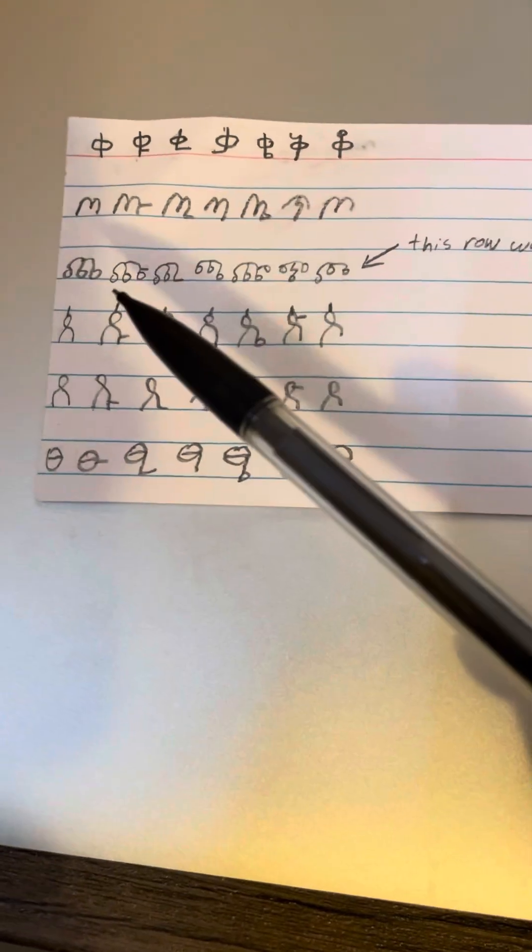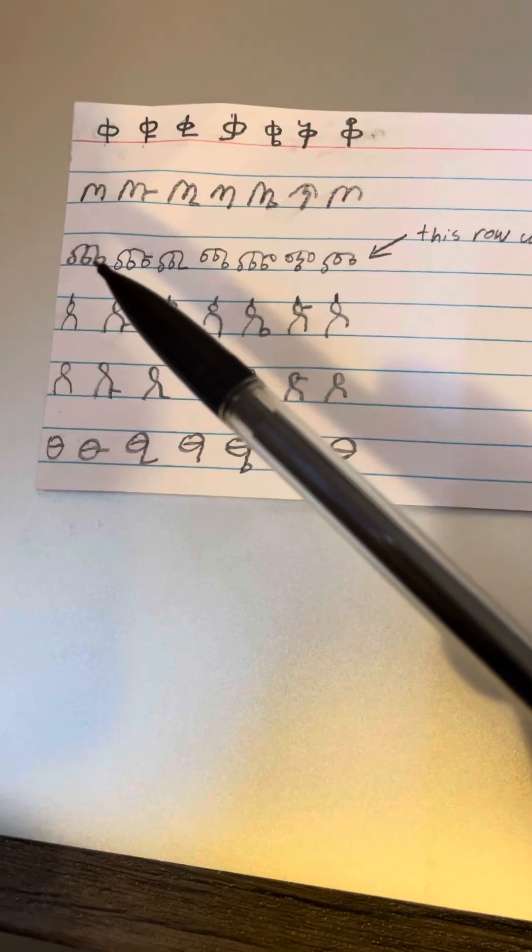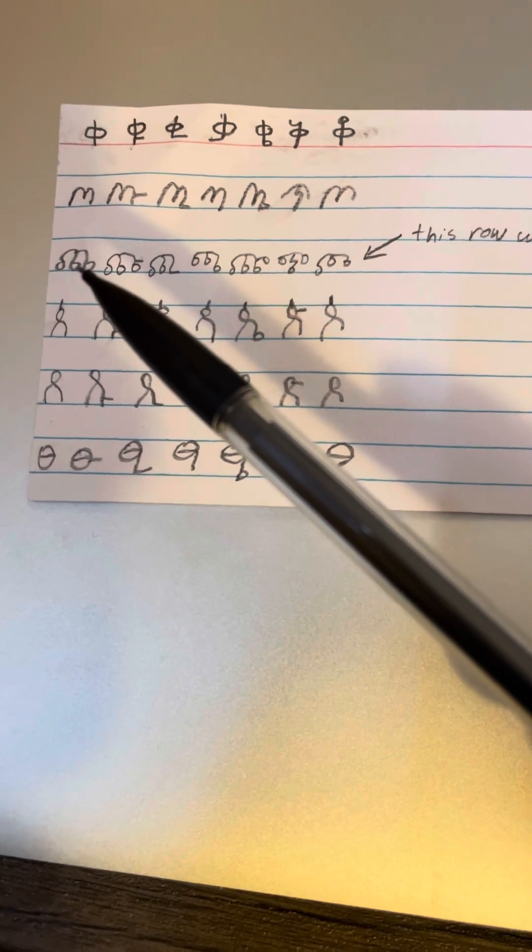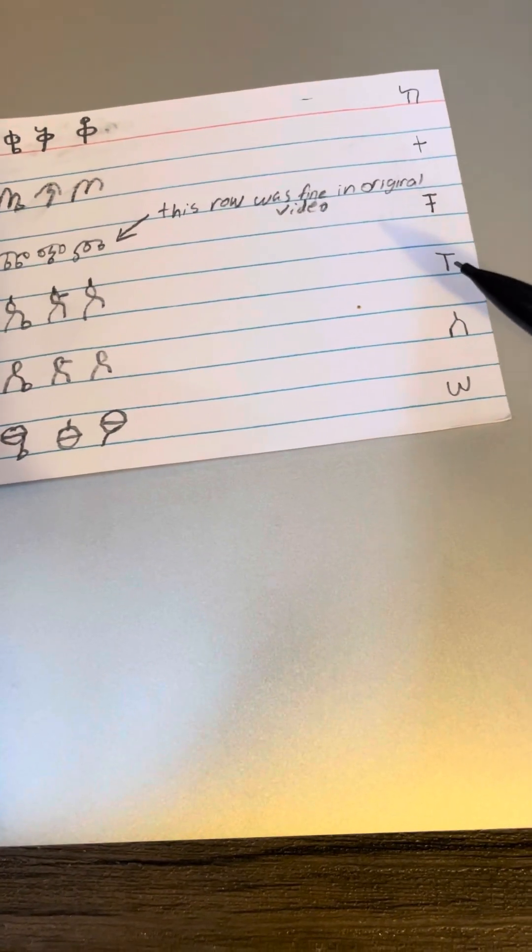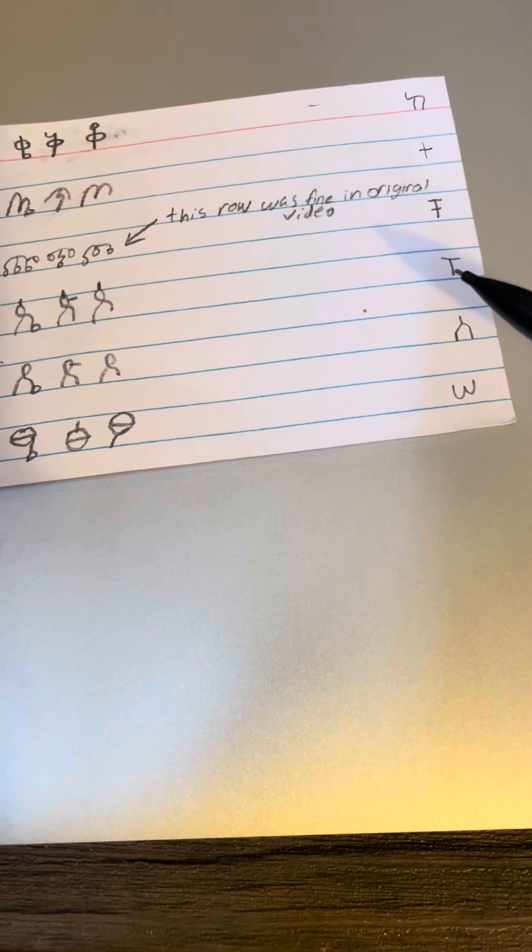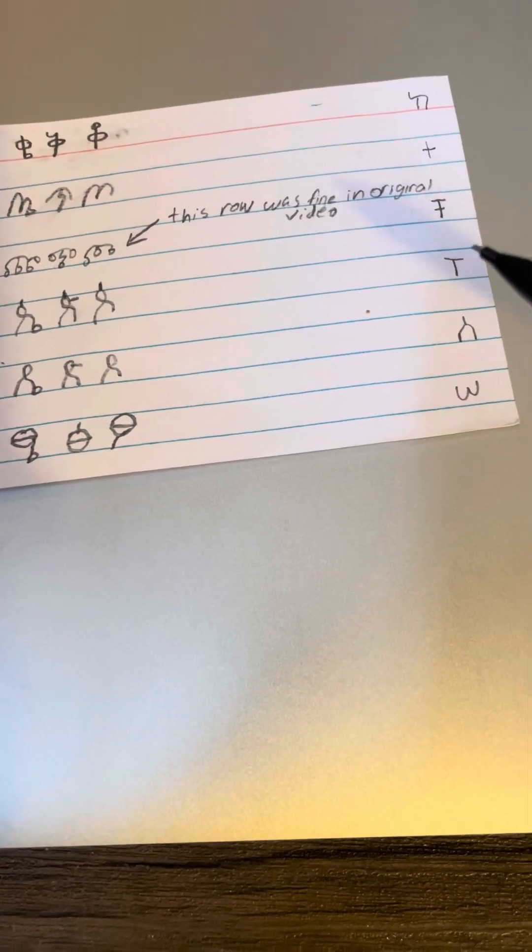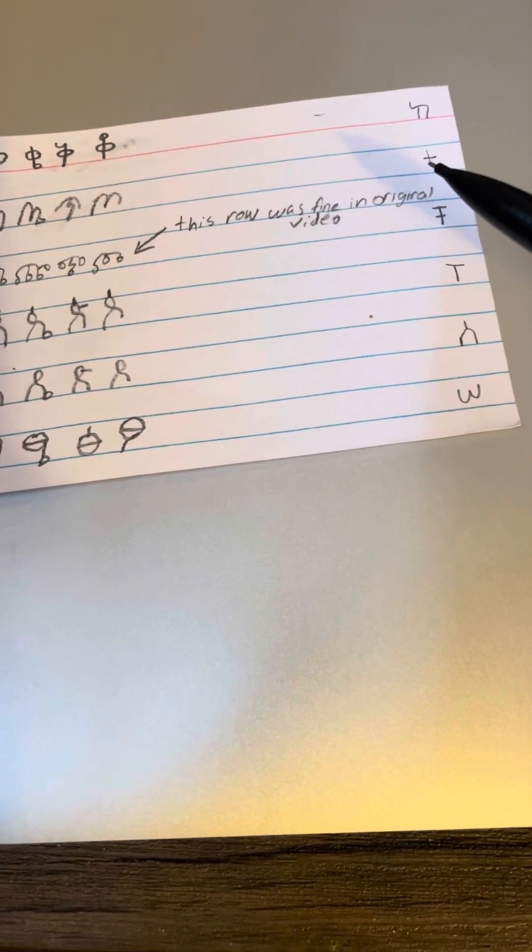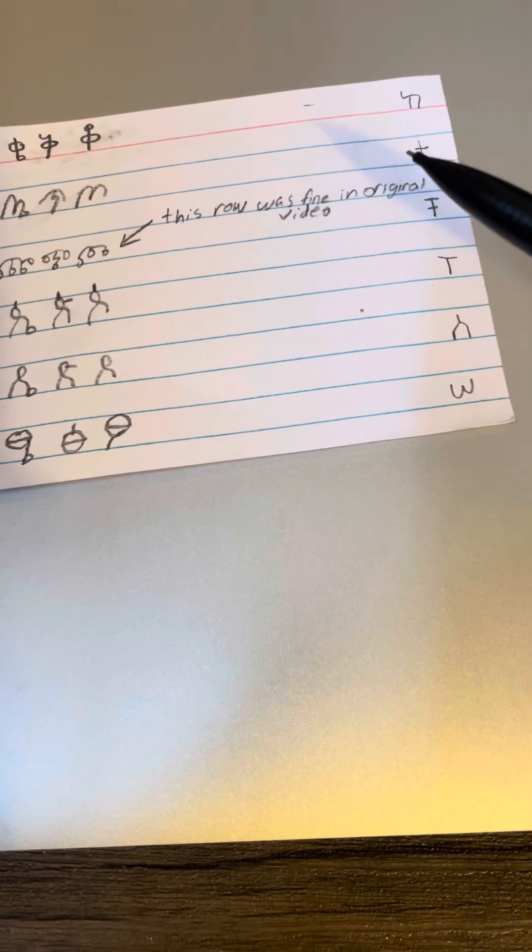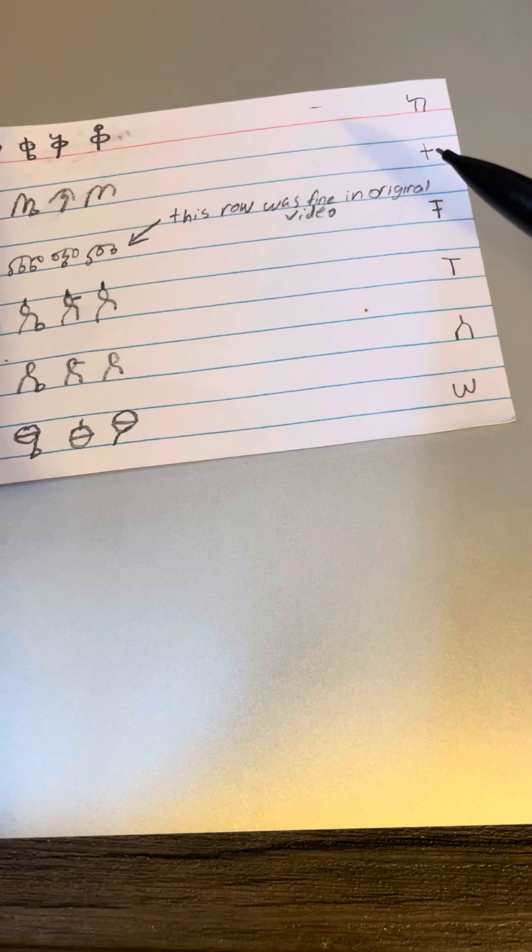We don't have this in English. We do have the P sound. It's a little bit confusing, but the P in Amharic is just a capital T, and then the T in Amharic is just a lowercase T, it looks like a lowercase T.